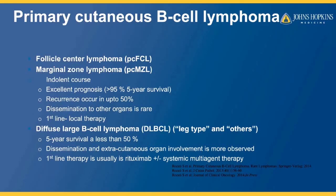Diffuse large B cell lymphoma, especially leg type, is a little bit different and has more aggressive behavior with a lower survival rate. It more commonly disseminates on the skin and also beyond the skin to other organs. So first-line therapy for this is usually systemic treatments.